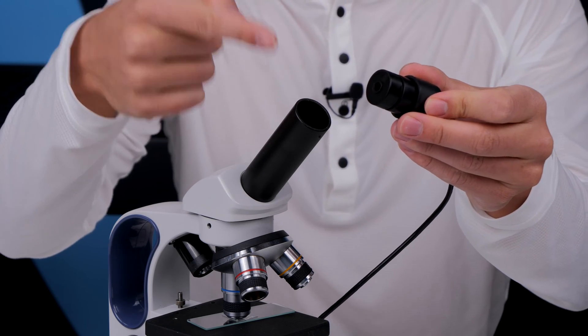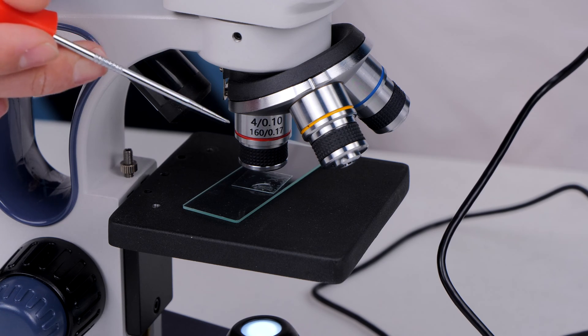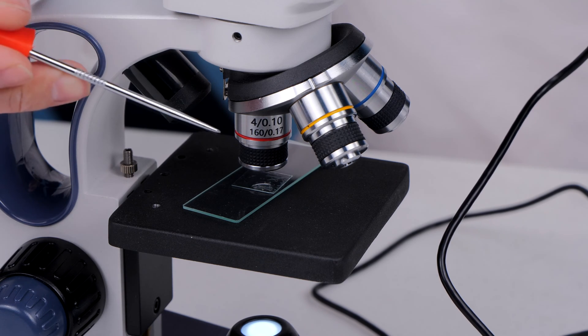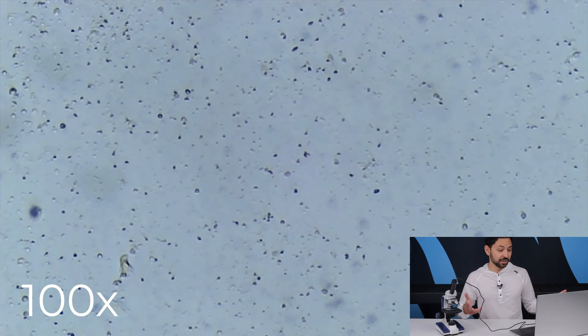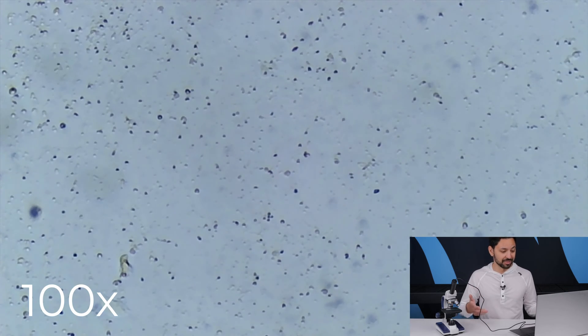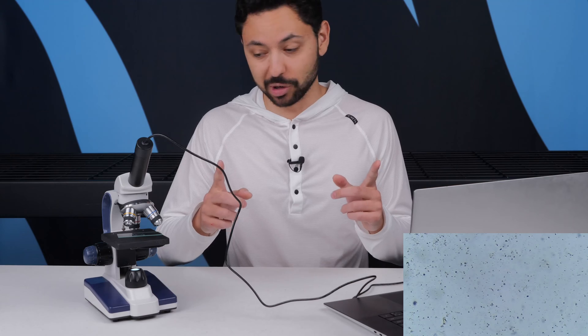I'm using a microscope camera that by itself adds 25 times magnification. Starting out with the 4x objective times 25 from the microscope eyepiece camera gives us 100 times total magnification. At this magnification you can see the head of the sperm. You can barely see the flagella, but I definitely want to go more magnified than that.